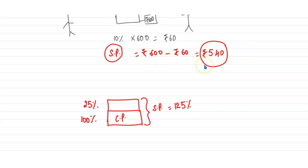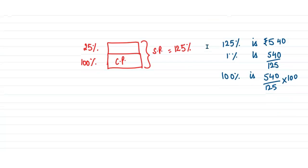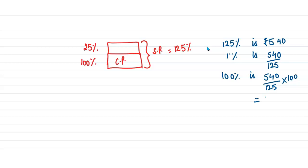So that means now we can say that 125% of the item is ₹540. So 1% is equal to ₹540 divided by 125. And 100%, that is the CP, would be equal to this. So when we cancel it out, we get ₹432 as the answer, which is 100%.